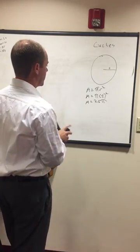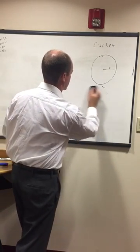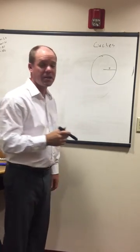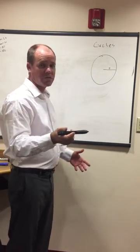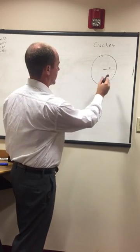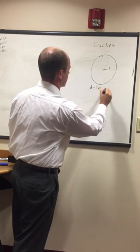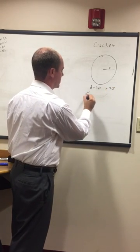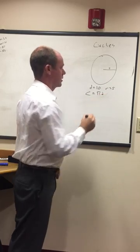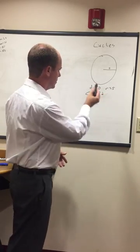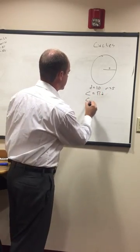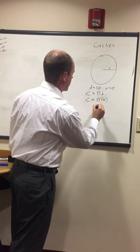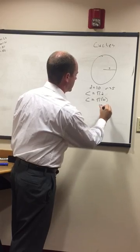Now, what if they wanted to know circumference? Same thing — we have a radius of 5. If they want to know circumference, we know that d equals 10. If r equals 5, then we need to know that circumference equals pi times d. So in this example, we know everything we need to know: c equals pi times 10, and that's 10 pi. And that's our answer.